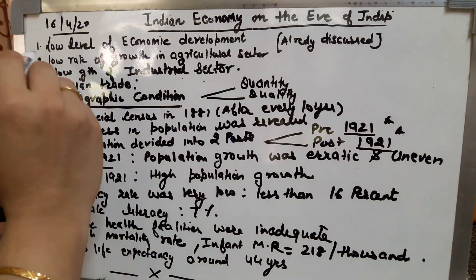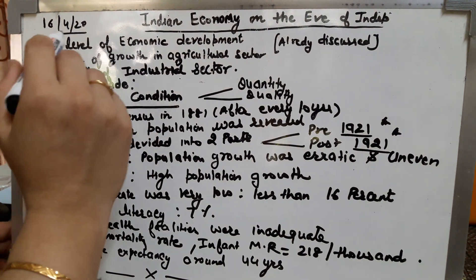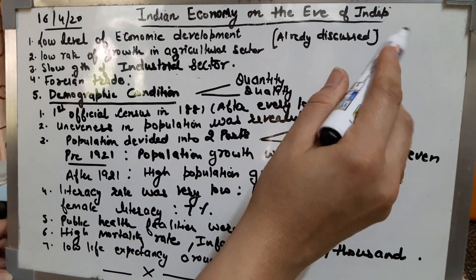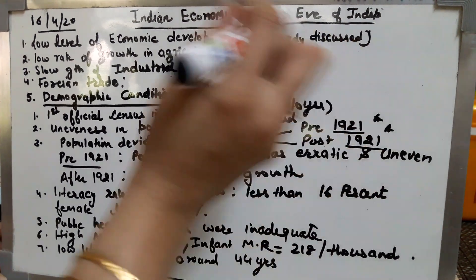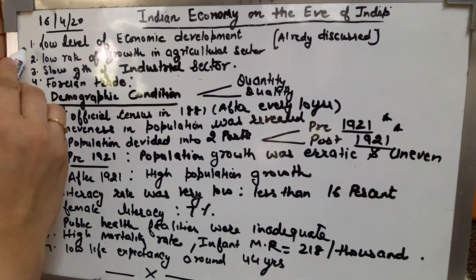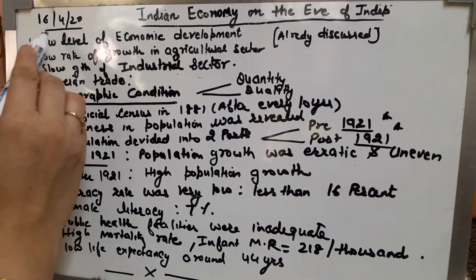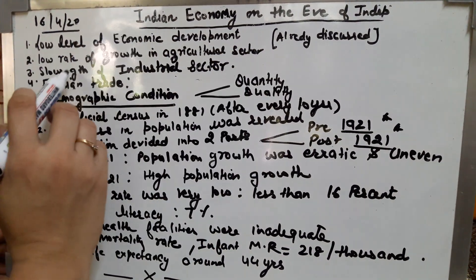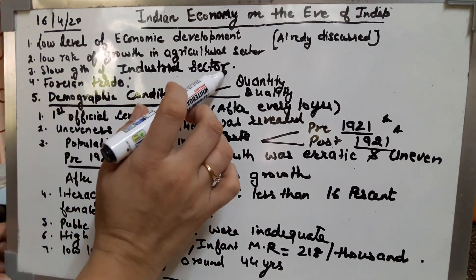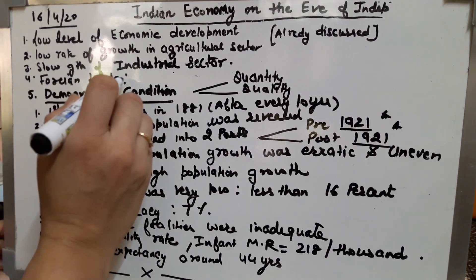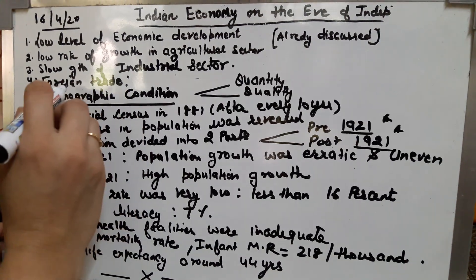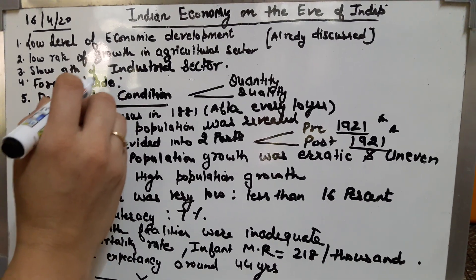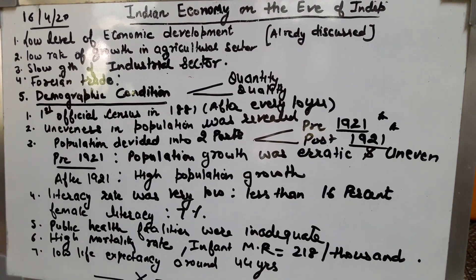Good morning students, we are back to our video. We were discussing Indian economy on the eve of independence and we have already discussed low level of economic development, low rate of growth in agriculture sector, slow growth of industrial sector and foreign trade. In yesterday's zoom class we discussed foreign trade and we will be revising it in the next class.